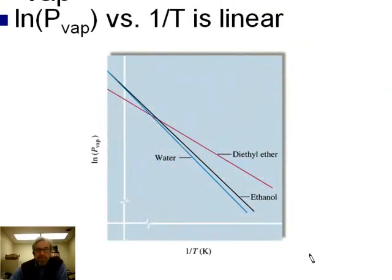So here's a picture of that. The natural log of vapor pressure versus the inverse of temperature, absolute temperature, turns out to be linear. And so you can see that these three curves that we had have now become lines when we plot them this way. So this elucidates the relationship. This makes it clear what the relationship is.